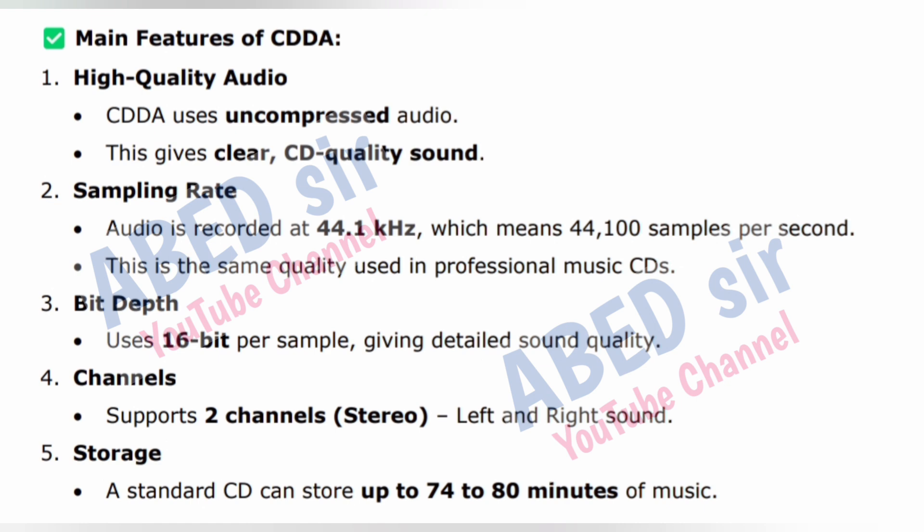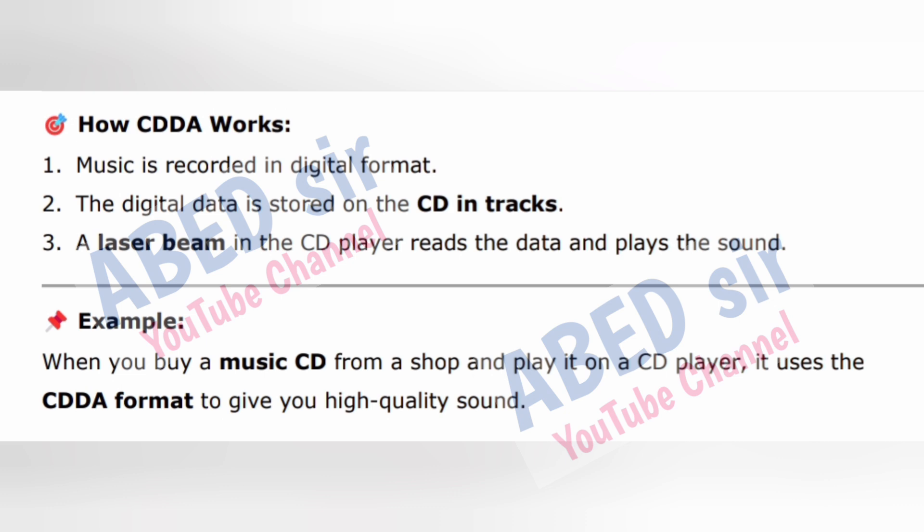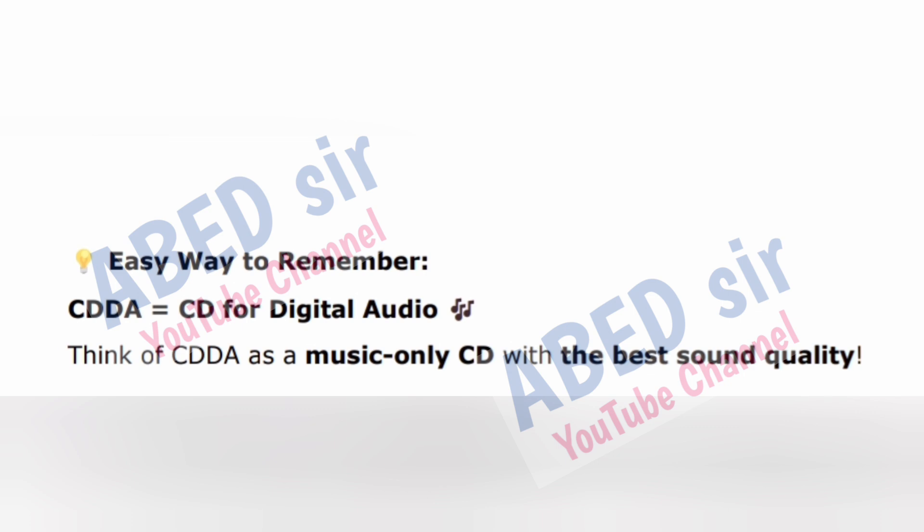Further features of CDDA: bit depth uses 16-bit per sample giving detailed sound quality; channels support 2-channel stereo (left and right sound); storage — a standard CD can store up to 74 to 80 minutes of music. How CDDA works: music is recorded in digital format; the digital data is stored on the CD in tracks; a laser beam in the CD player reads the data and plays the sound. Example: when you buy a music CD from a shop and play it on a CD player, it uses the CDDA format to give you high-quality sound. Think of CDDA as a music-only CD with the best sound quality.